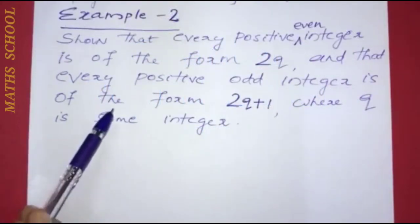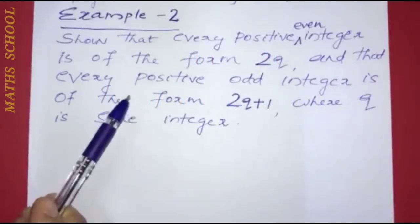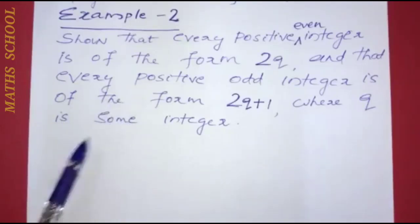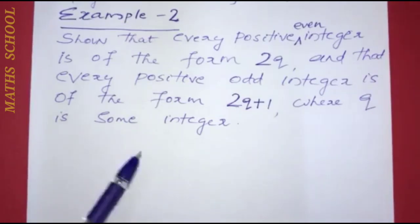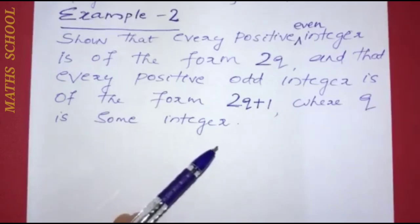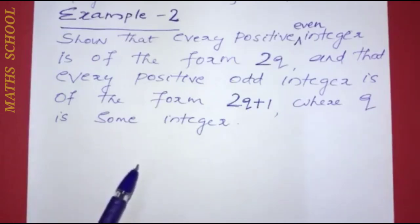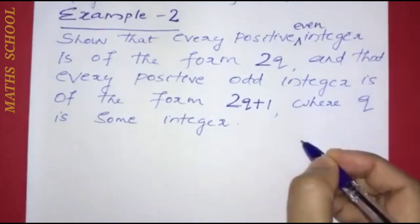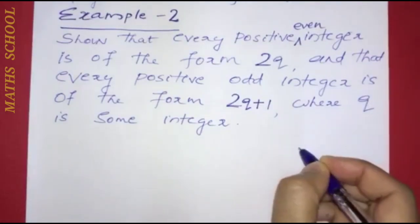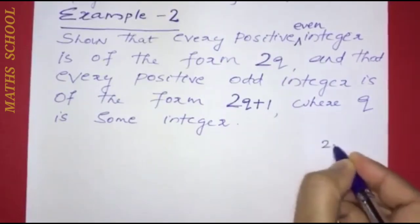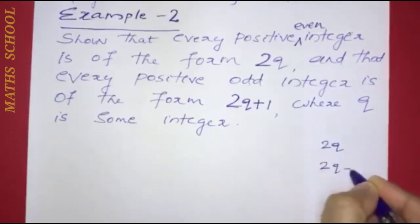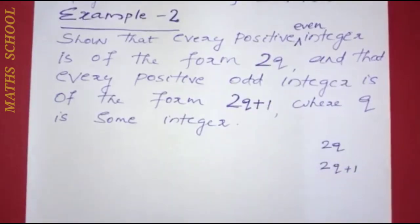In the textbook, I will explain how to work out the problem: show that every positive even integer is of the form 2q, and that every positive odd integer is of the form 2q plus 1, where q is some integer. We have to prove that every positive integer is of the form 2q or the form 2q plus 1.